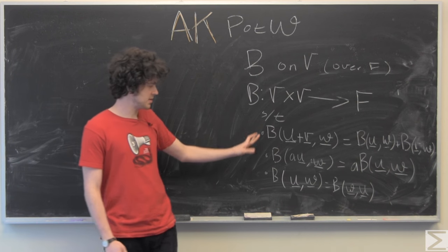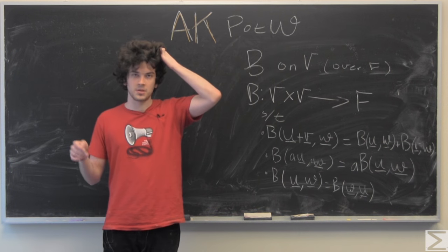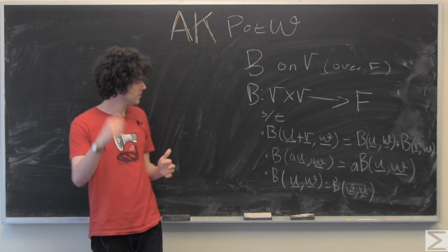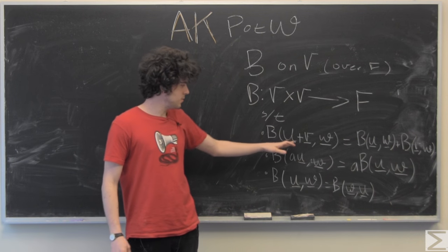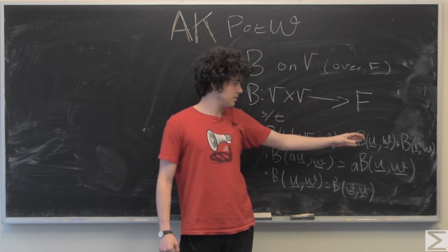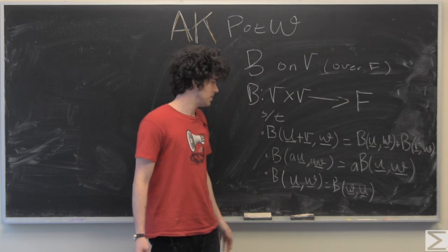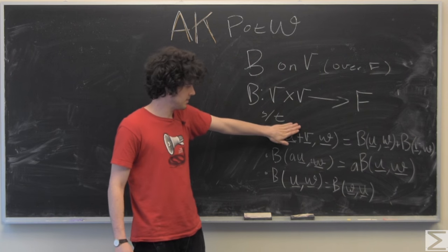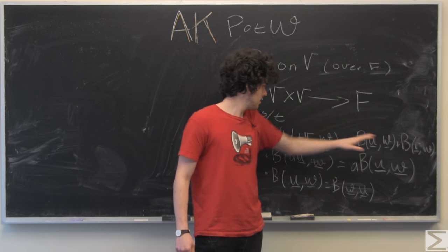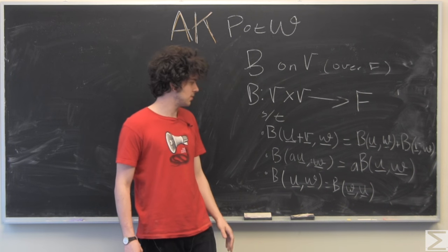And you might see these first two written as one, but I've broken them up for the sake of this video. So B of U plus V comma W is equal to B of U comma W plus B of V and W. That means that if we fix V, we have this one and then we fix W, we have that first one.